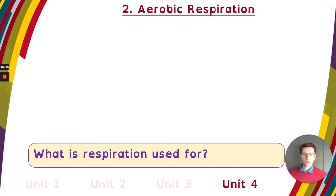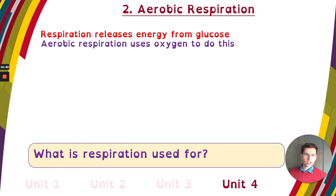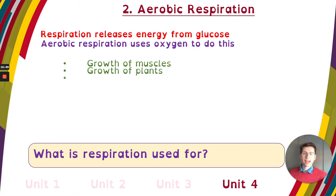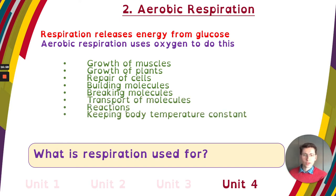What is respiration useful for? Pause for just five seconds and think about it. Respiration releases energy from glucose — that's the definition of respiration. Aerobic respiration uses oxygen to do that. From it we get energy that can be used to grow muscles, grow plants, repair cells, build molecules, break molecules, transport molecules, do any other chemical reaction needed in the body, and to keep our body temperature constant. Respiration is an exothermic reaction — it releases heat energy, which makes us warm. That's why when you exercise a lot, you get really warm.